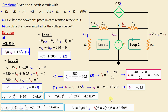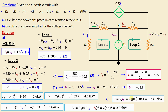Moving to part B: the power supplied by the voltage source VS = VS × IB = 280 × (−84) = −23.52 kW.